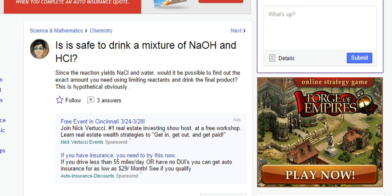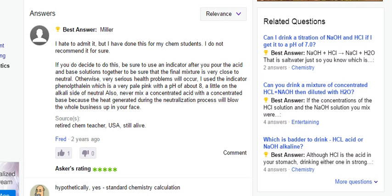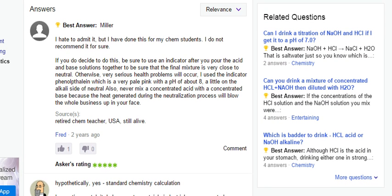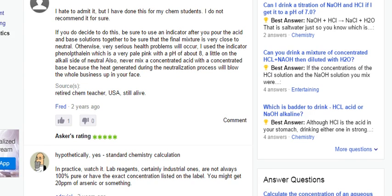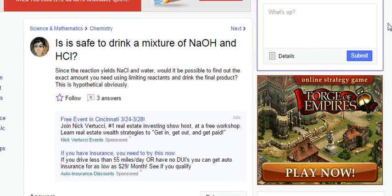And so I even went on the internet and I found this question: is it safe to drink a mixture of sodium hydroxide and hydrochloric acid? Since the reaction yields sodium chloride and water, would it be possible to find out the exact amount you need using limiting reactants and drink the final product? But this is hypothetical, obviously. And I would like to caution you, don't try this at home, whatever you do. Don't try this in the lab. It's stupid. It's dumb. Don't do it.